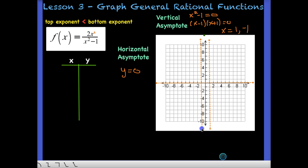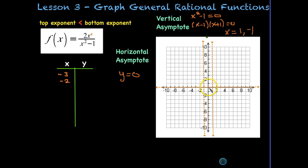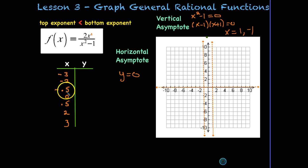I'll plot both asymptotes and plan for three legs: one on the left, one in the middle, and one on the right. For points I'll pick x = -3 and -2 on the left, x = -0.5, 0, and 0.5 in the middle, and x = 2 and 3 on the right. A calculator helps, especially for squaring 0.5.